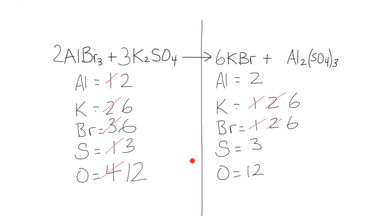This is why we leave oxygen until the very end — it usually balances itself out. For this balanced chemical equation, we needed a two out front on the left, then a three, a six on the right, and nothing on the other compound. And that gives us our balanced chemical equation.